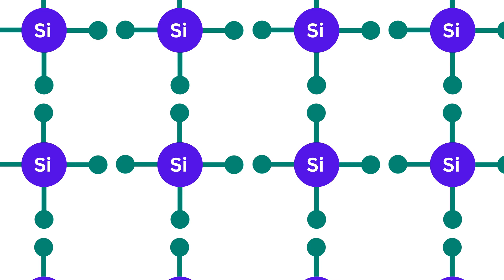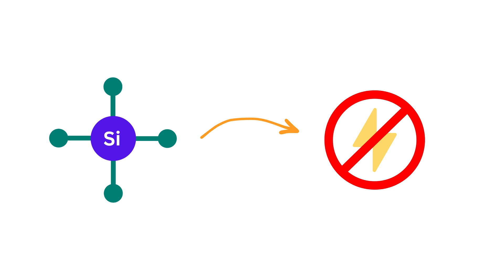But here's the thing: at room temperature, all the electrons are tightly held in their places and there are no free electrons which are needed to carry current. That means pure silicon doesn't conduct electricity well and therefore it's almost an insulator. So how do we make it useful?